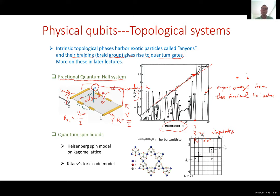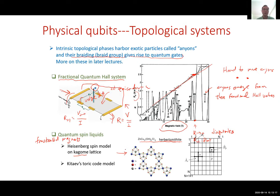The problem with the fractional quantum Hall system is that it's very difficult to control where the anions are and how to move them around. Other systems with anyons include frustrated magnetic systems — for example, the herbertsmithite material with a kagome lattice geometry, whose spins interact via the Heisenberg interaction S_i · S_j. It's believed the ground state is a quantum spin liquid, with anyonic excitations.